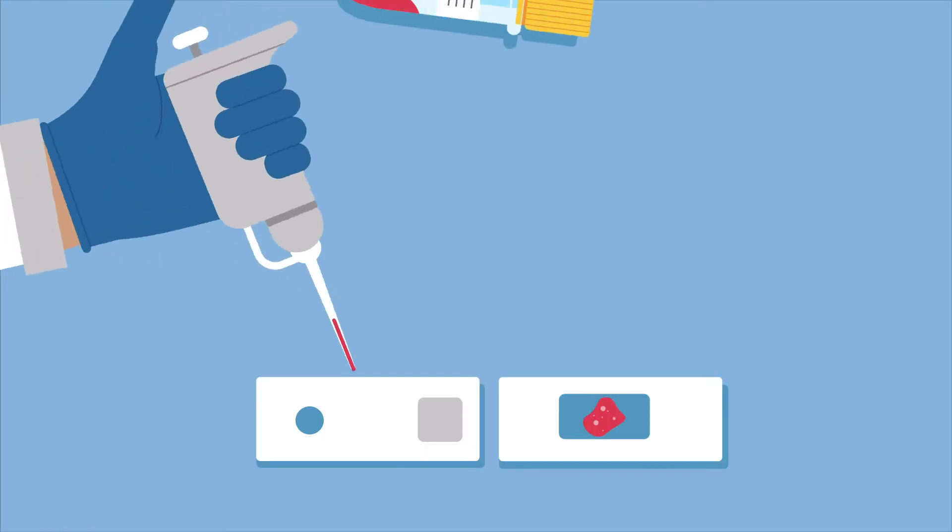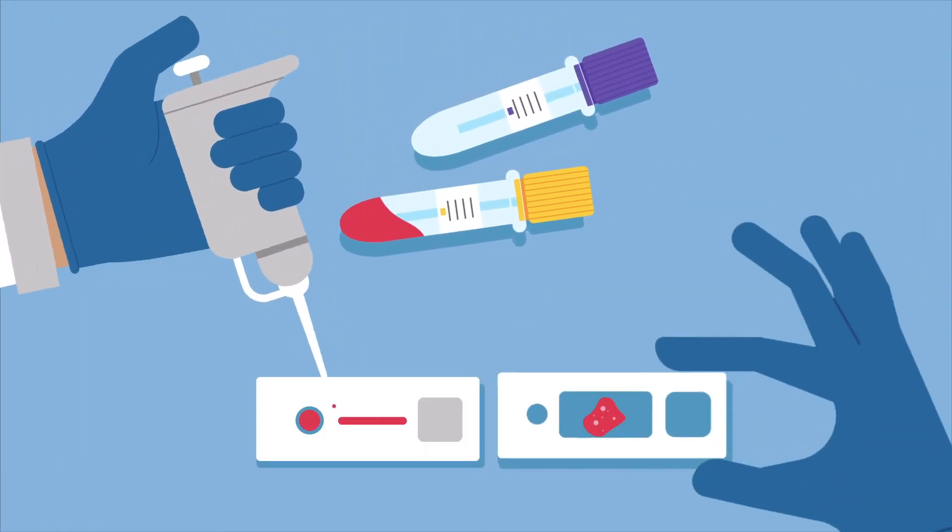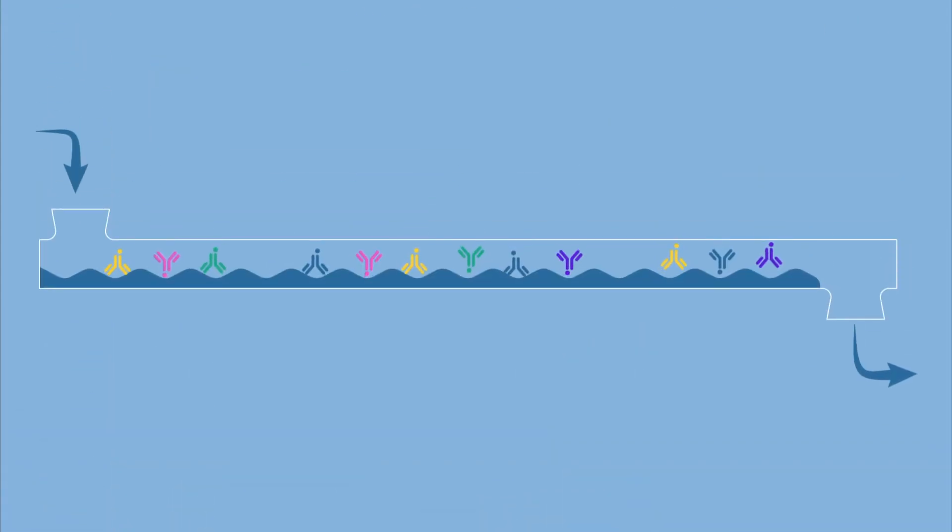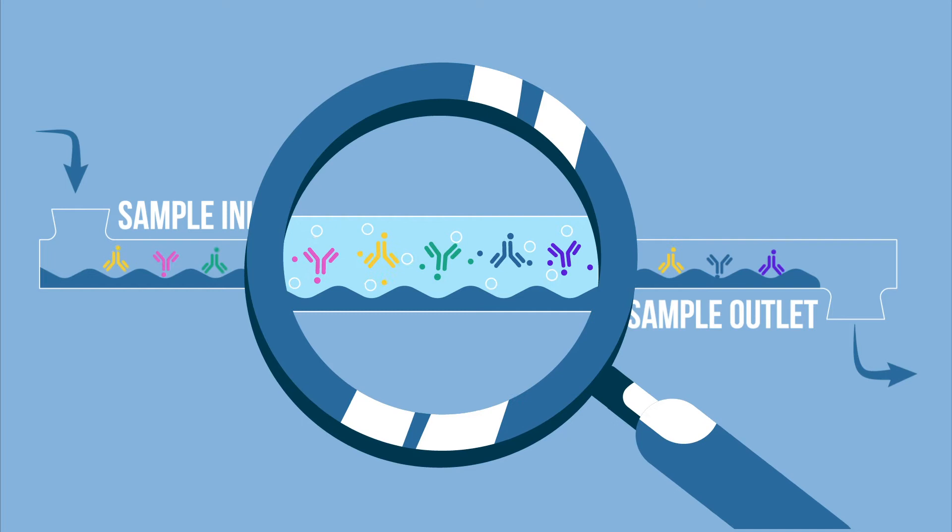With CHIP Cytometry, tissue sections or cell suspensions are loaded onto the proprietary sample chips for analysis, and reagents are delivered to the sample through microfluidics.